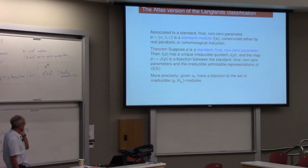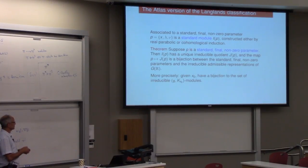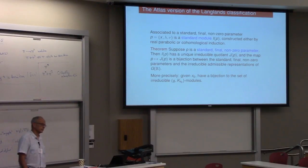Okay, and just to be super precise, in order to really write down this projection on the nose, as we've been talking about, you have to pick an x-naught, and then what you get is a bijection between this set and the irreducible G-K-x-naught modules. That's really what you're being mentioned. Okay?